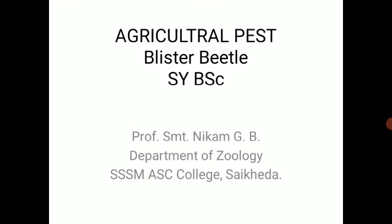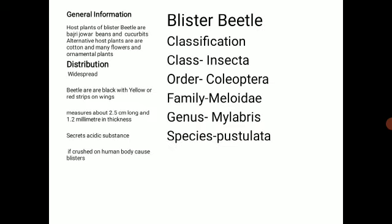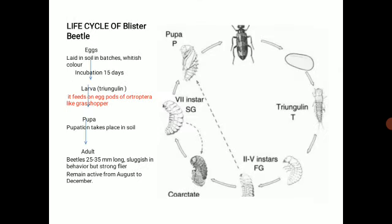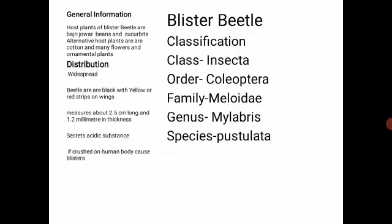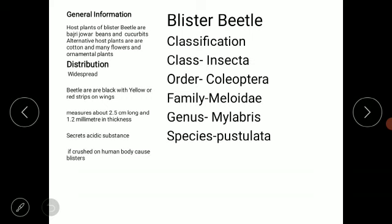Next we study the classification of the blister beetle. It belongs to class Insecta, order Coleoptera, family Meloidae, genus Mylabris, and the species is Pustulata. So the scientific name of the flower beetle or blister beetle is Mylabris pustulata.